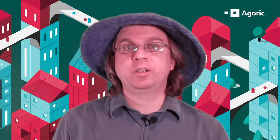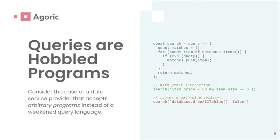Imagine you serve data and want to allow clients to make arbitrary queries on that data without transmitting all of the data. You arrange for a client to send a program to the data, instead of the data to the program. We typically use hobbled programming languages for this kind of interaction, to avoid making the service vulnerable to these programs. In JavaScript, you might naively evaluate an arbitrary JavaScript query, but with the soft and malleable version of the JavaScript language, the query receives far too much power.